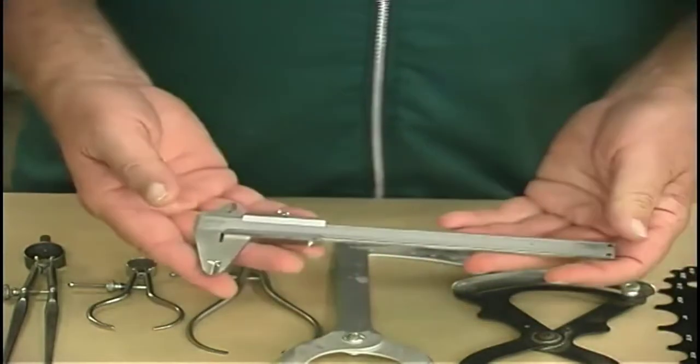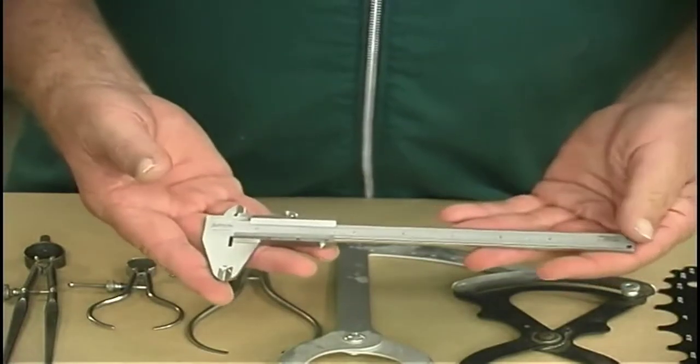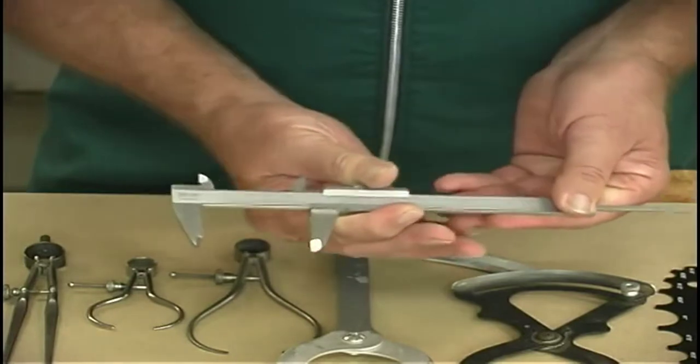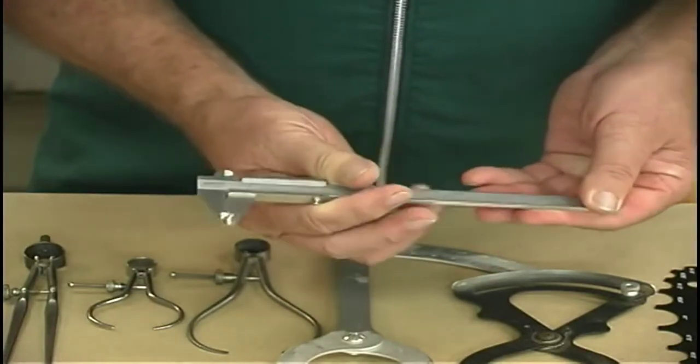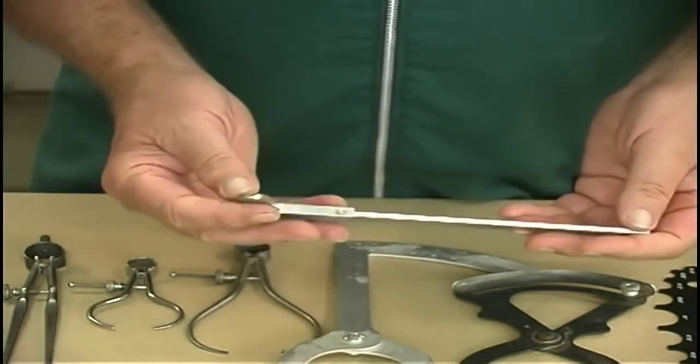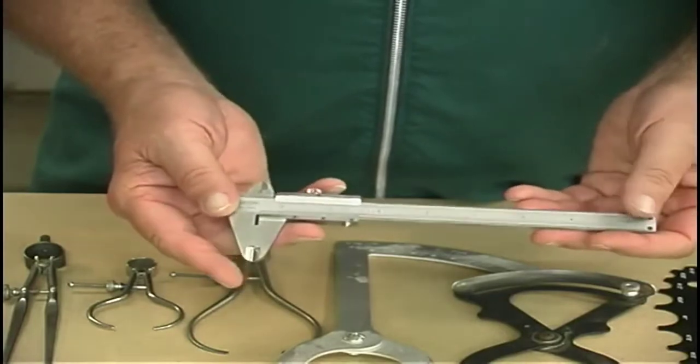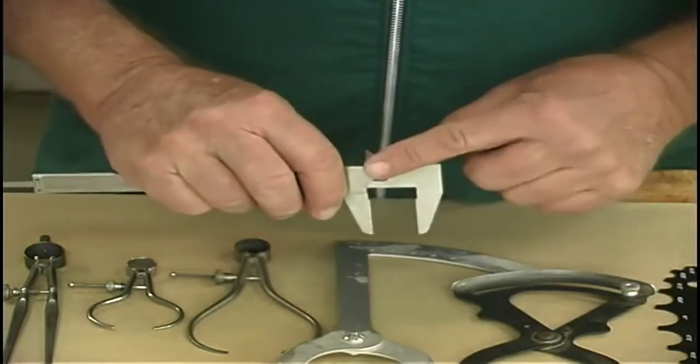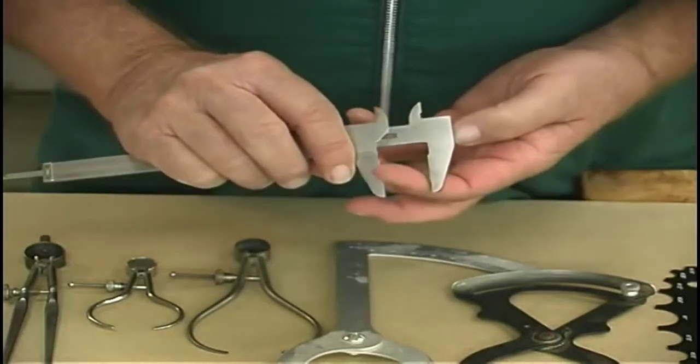Another tool that I find very, very useful, especially it has a larger capacity and that is a vernier caliper. They're very accurate, being thin they slip into a lot of places and they will also check an ID or an OD.